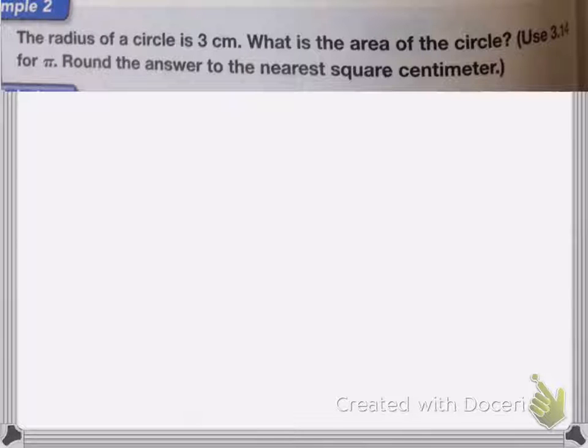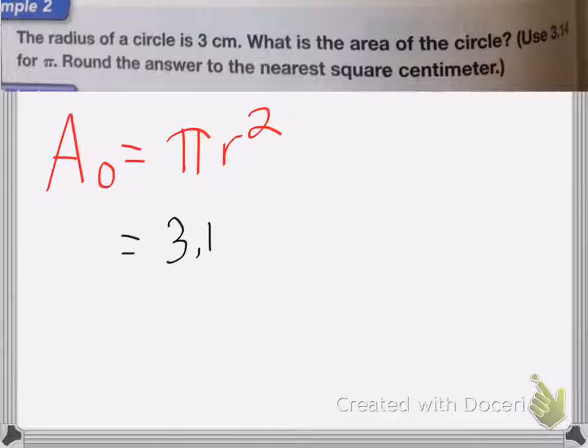Now here we have the radius of the circle is 3 centimeters. What is the area of the circle? Use 3.14 for pi and then round it to the nearest square centimeter. So in this case, if you remember, the area of my circle is equal to pi times the radius squared, pi r squared. So let's go ahead and put in my numbers. So that is equal to 3.14 times by the radius, which is 3 squared.